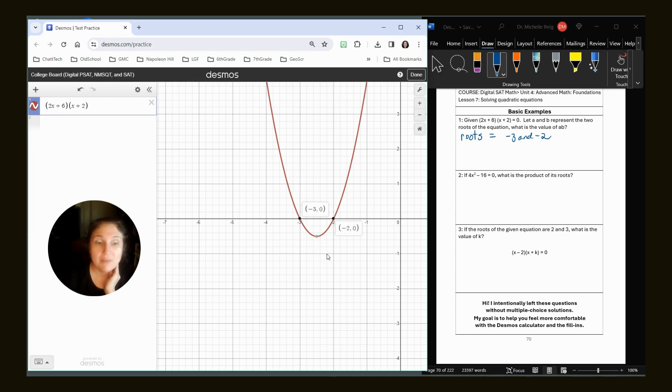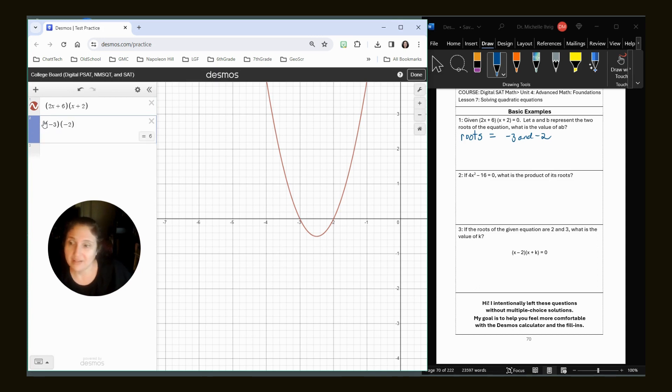Lesson over. Negative three and negative two are roots. They want to know what's the value of AB. So what we're going to do is we're just going to say, all right, well, what's negative three times negative two? Positive six. And this is our answer.